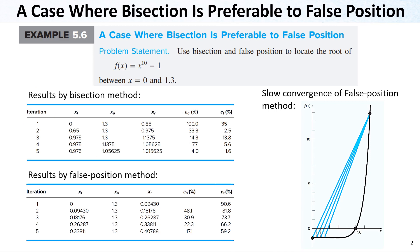In this slide, we have an example where bisection is preferable to false position because false position has some convergence issues. The function is x to the power 10 minus 1, and the initial values are 0 and 1.3 for locating the root. On the right-hand side, you can see the function, and it is very steep. This might cause a problem, and the root is somewhere here.